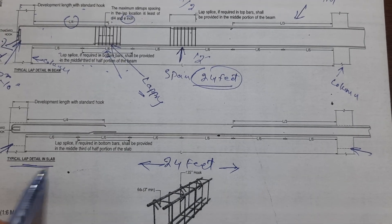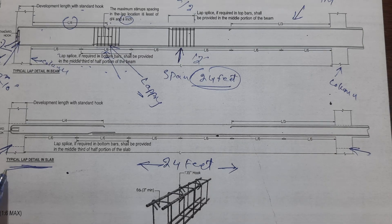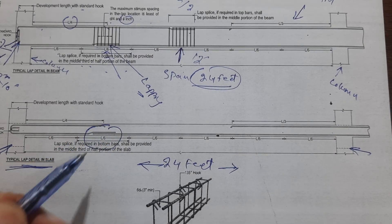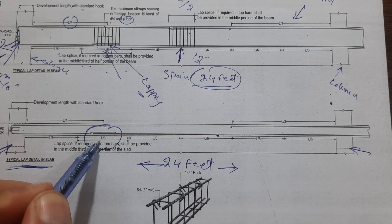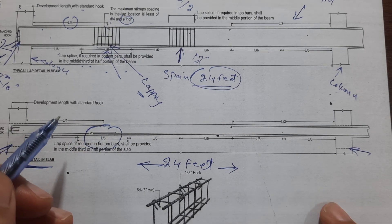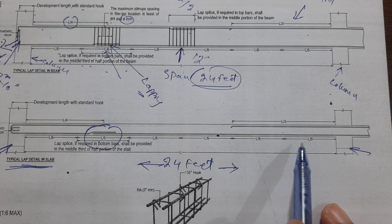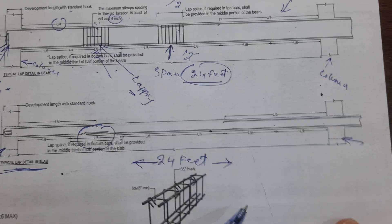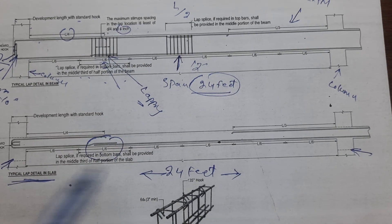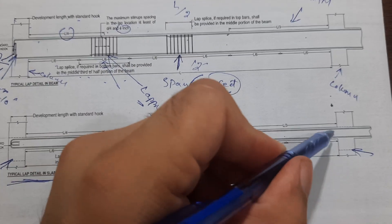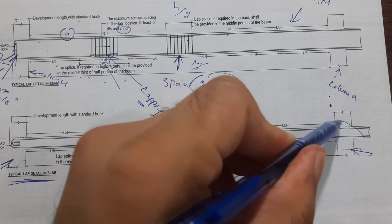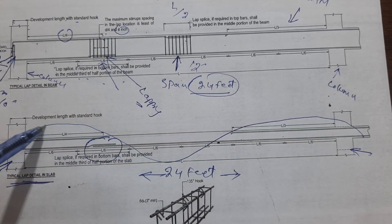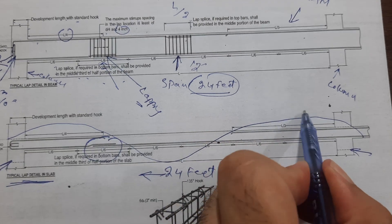Next, for the typical lap detail in a slab — lapping is allowed to be provided at the bottom portion at the distance of l/6. If you see, extra steel rods should be provided at the upper portion of the slab. When a load is applied on the top, the slab deflects, and the middle portion shows the bending behavior.